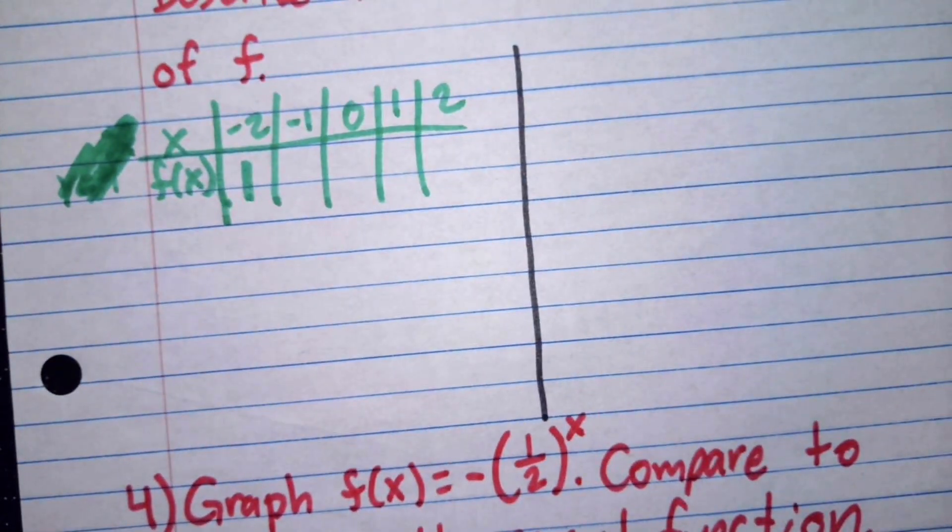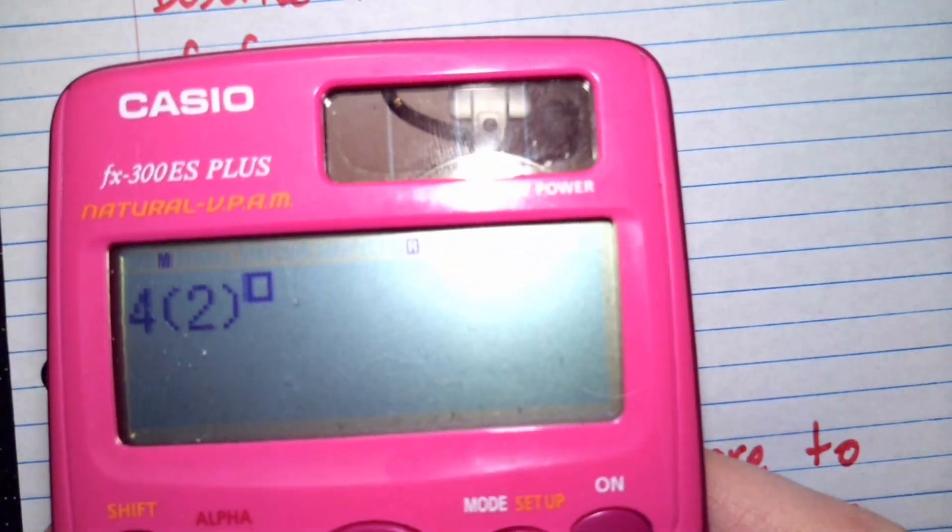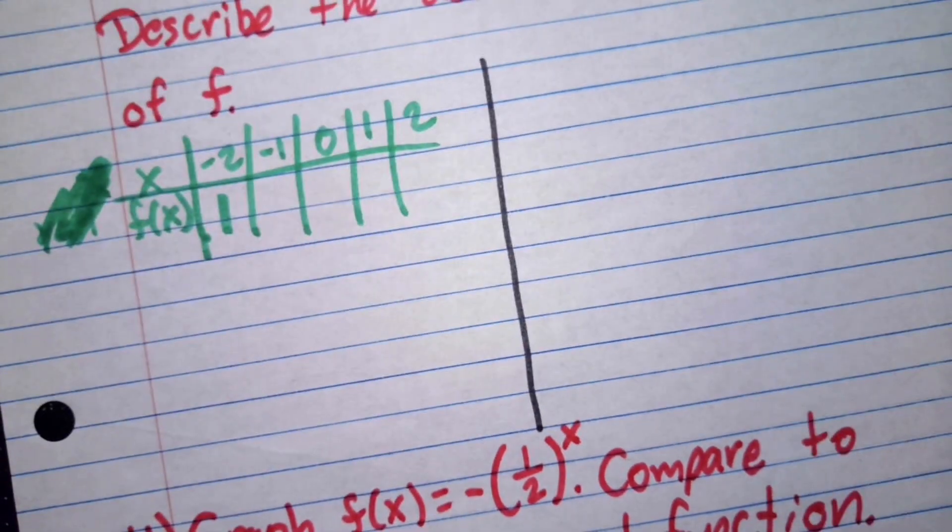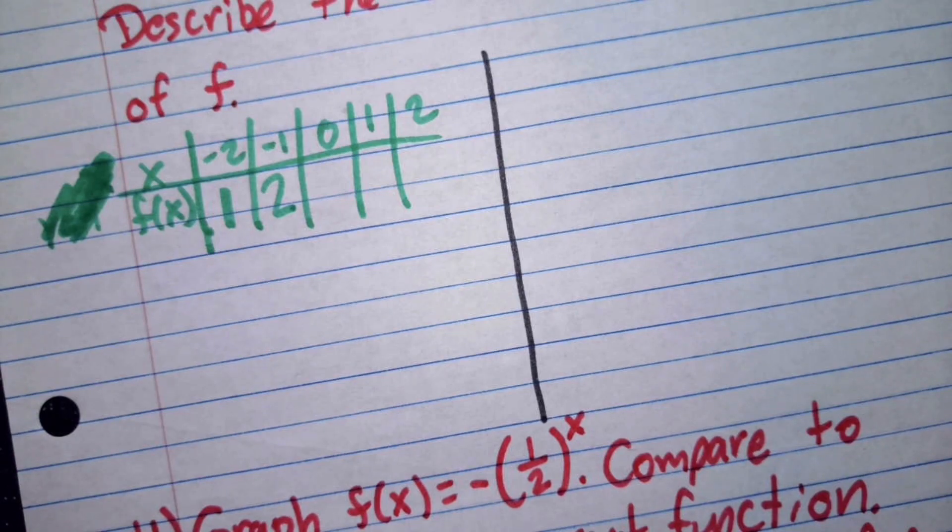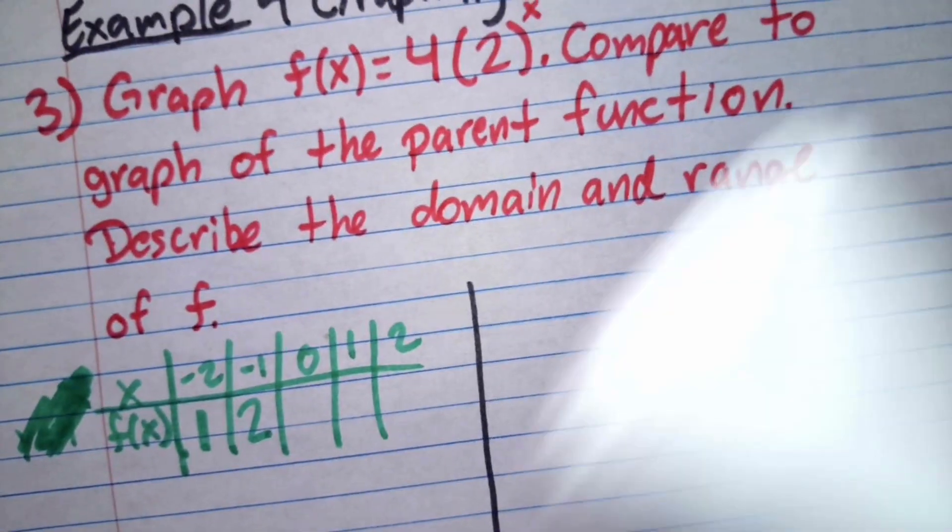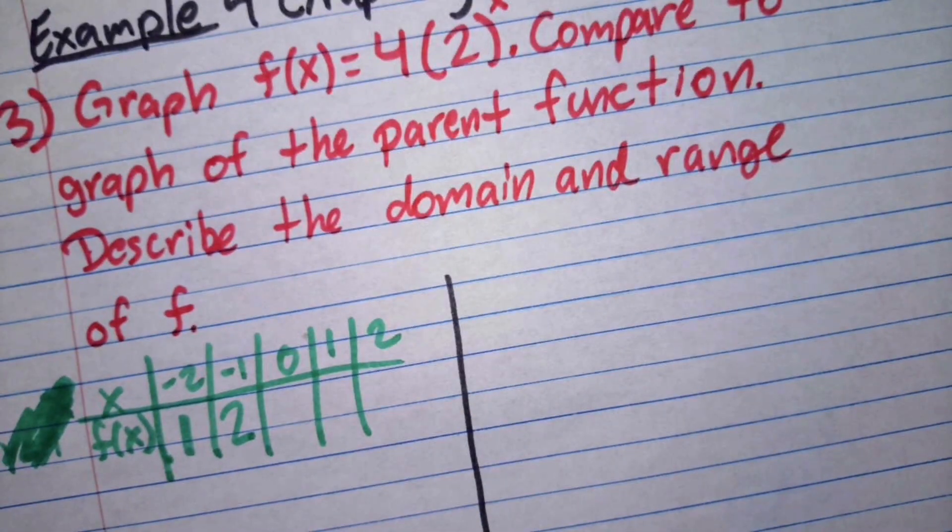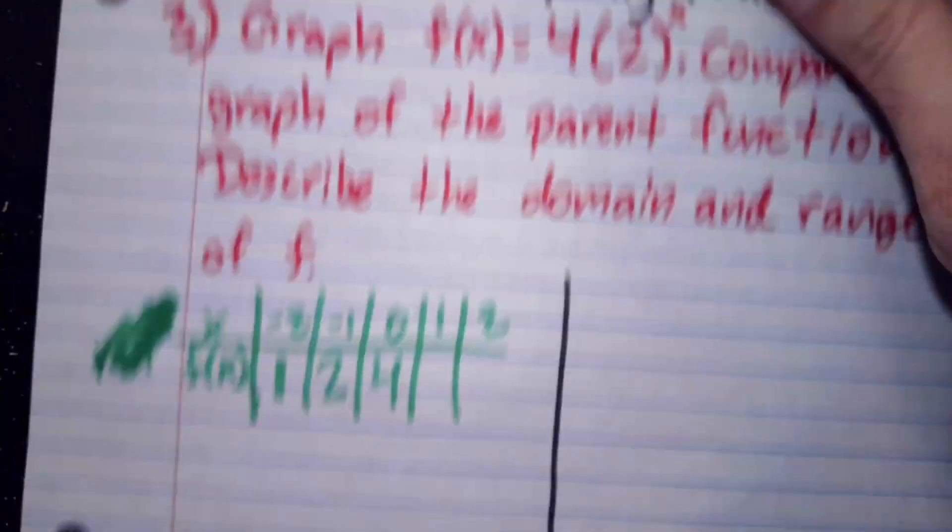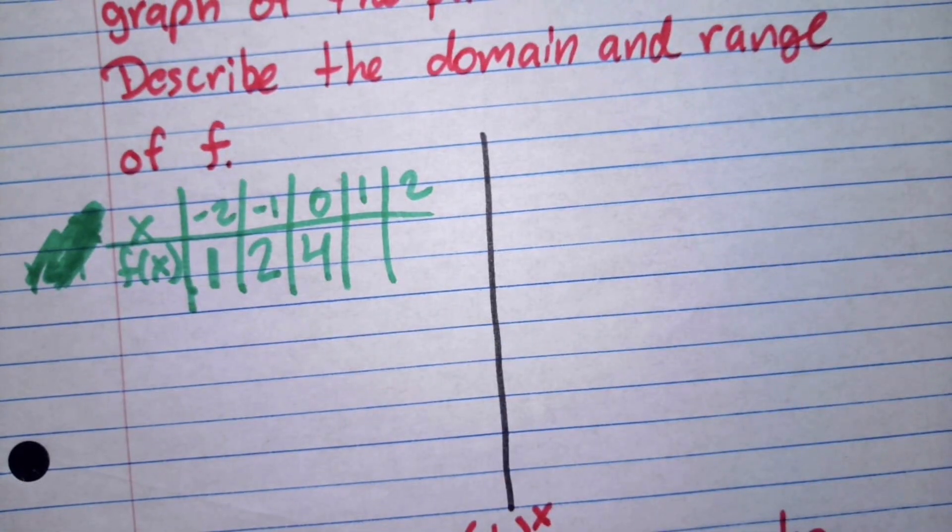So we'll put that down there. We'll repeat the process. 4 times 2 to the negative 1 power is going to give us 2. When x is 0, that one's a little bit easier to calculate because 2 to the 0 is 1. 1 times 4 is 4. And then same thing for the positive numbers. These are a little bit more common to work with. When x is equal to 1, 2 to the 1 is just 2. 2 times 4 gives me 8.